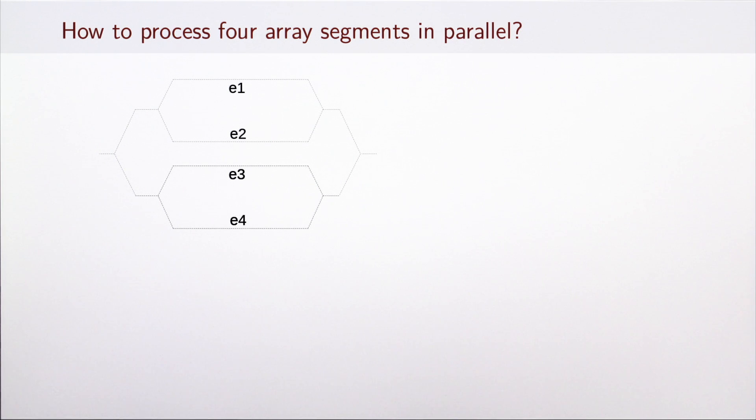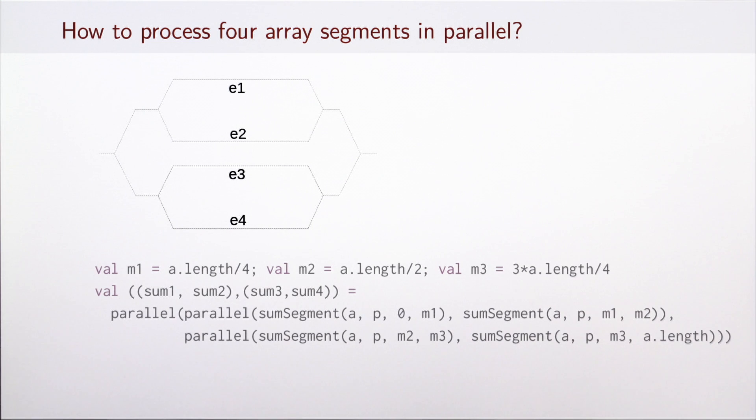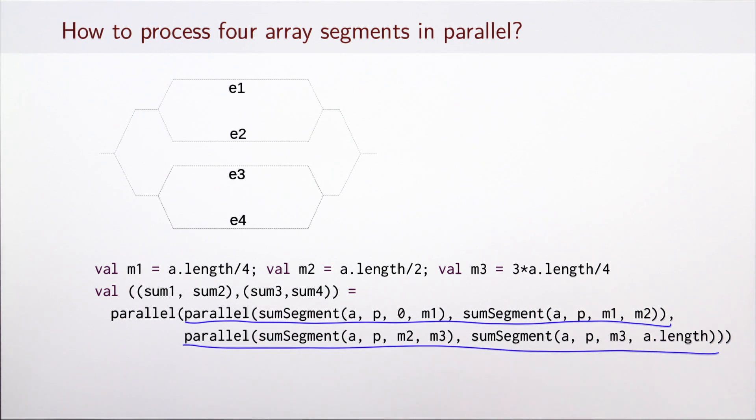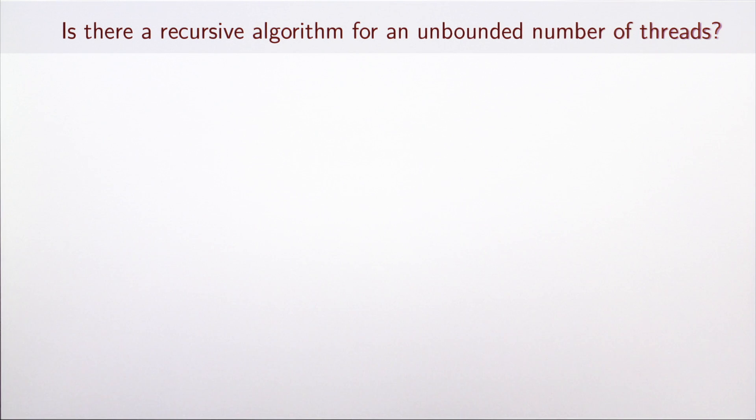How would we generalize this to process four array segments in parallel? We can divide the array into four segments. We take first two segments and sum them up in parallel. We take the second two segments and sum them up in parallel. Now we have two computations, which themselves can run in parallel, which we do by invoking yet another parallel instance. It is natural to consider how to generalize this idea to an algorithm that works with an arbitrary number of threads. What would be a function that processes very large arrays and exploits as much parallelism as we might have?